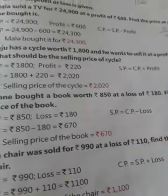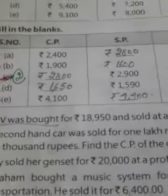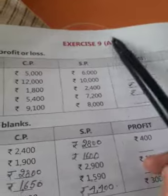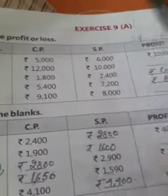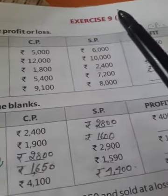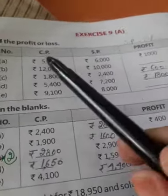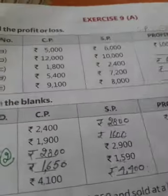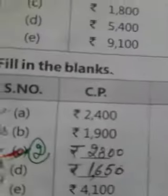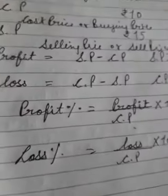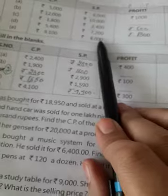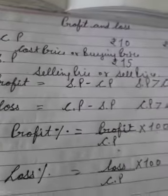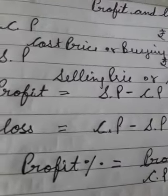Those were some examples of Profit and Loss. Now your work is to do the first sum of exercise 9A in your notebook, in which cost price and selling price are given and you have to tell whether there is a profit or a loss. With these formulas, you have to solve your first sum. If you have any doubt or any query regarding this chapter, you can ask me.